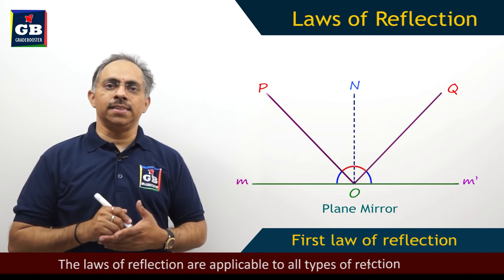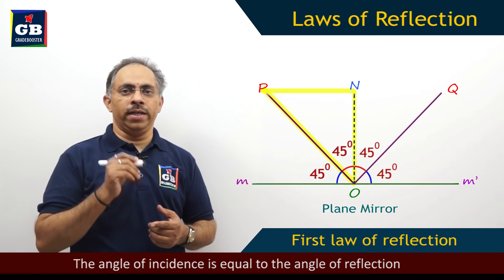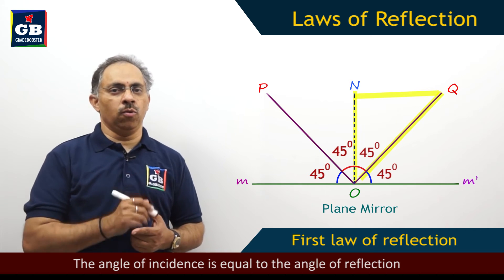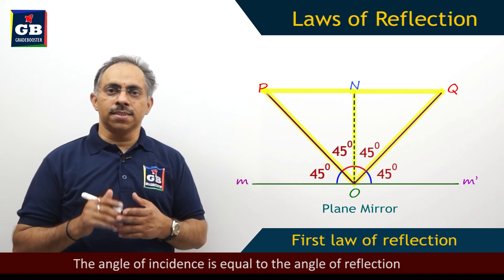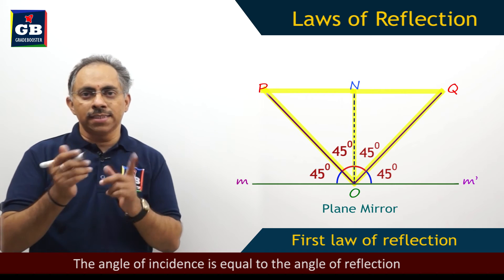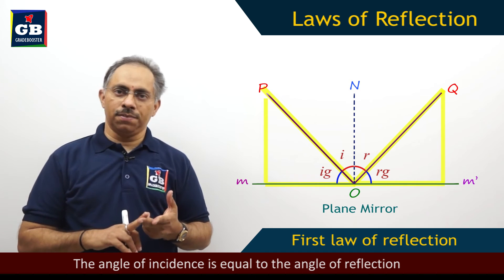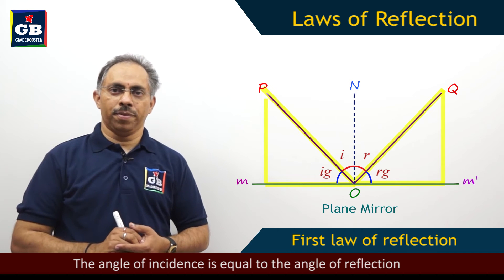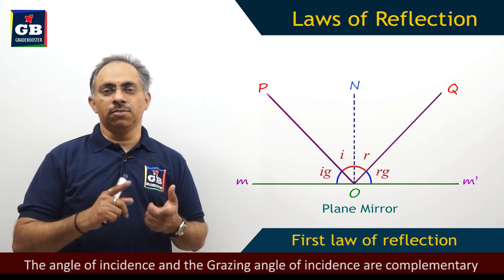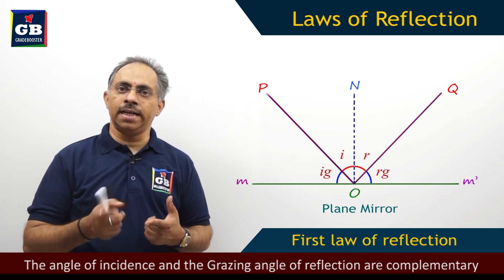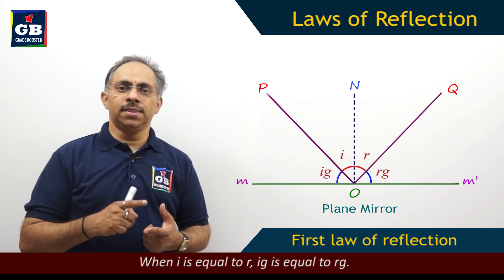When we talk about the laws of reflection, there are two laws basically. The first law is: the angle of incidence is equal to the angle of reflection. Here you can see the angle PON and the angle QON will both be equal — that is the meaning of the first law of reflection. When these two angles are equal, obviously the grazing angle of incidence IG and the grazing angle of reflection RG will also be equal, because the grazing angle and the angle of incidence are complementary, and similarly for reflection. So when i equals r, we have IG equals RG.